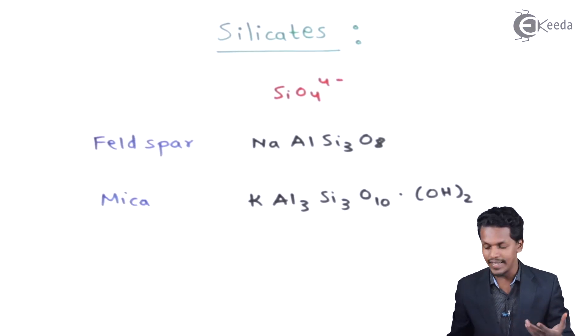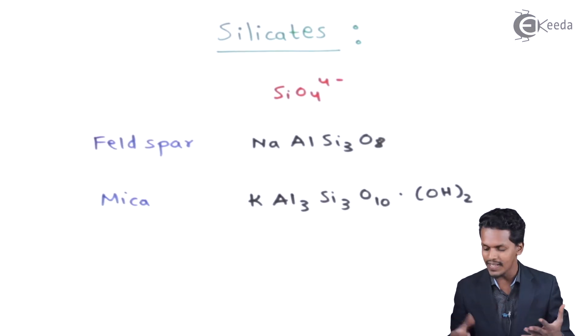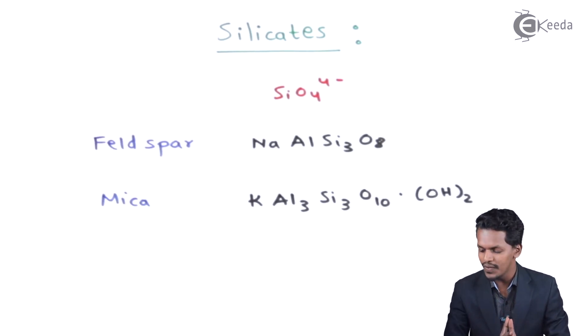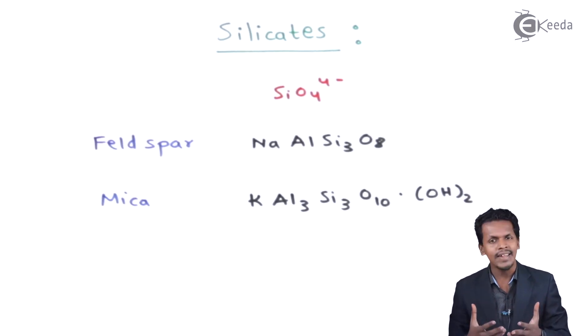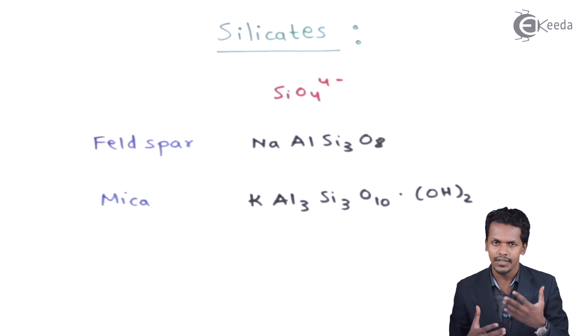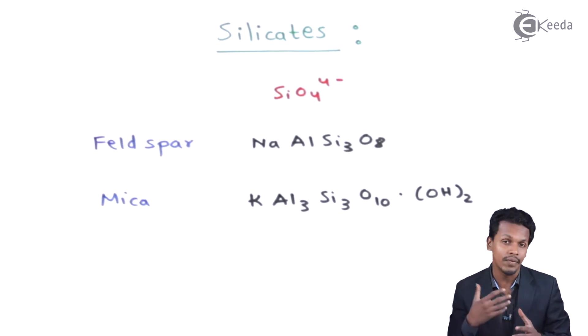In both of these silicates, the repeating or common unit is SiO4⁻. All silicates are basically made up of this group. You can observe that silicon has a valency of 4 — it is associated with 4 oxygen atoms. Oxygen has a valency of 2, and that is the reason it cannot form a double bond with silicon, since silicon doesn't form double bonds and will always form a single bond.